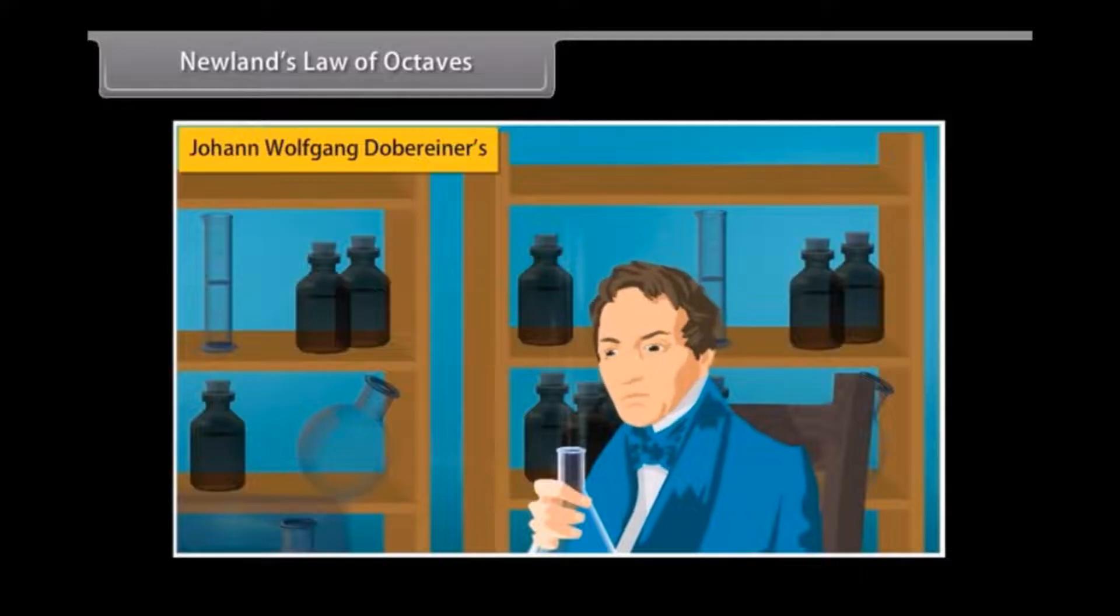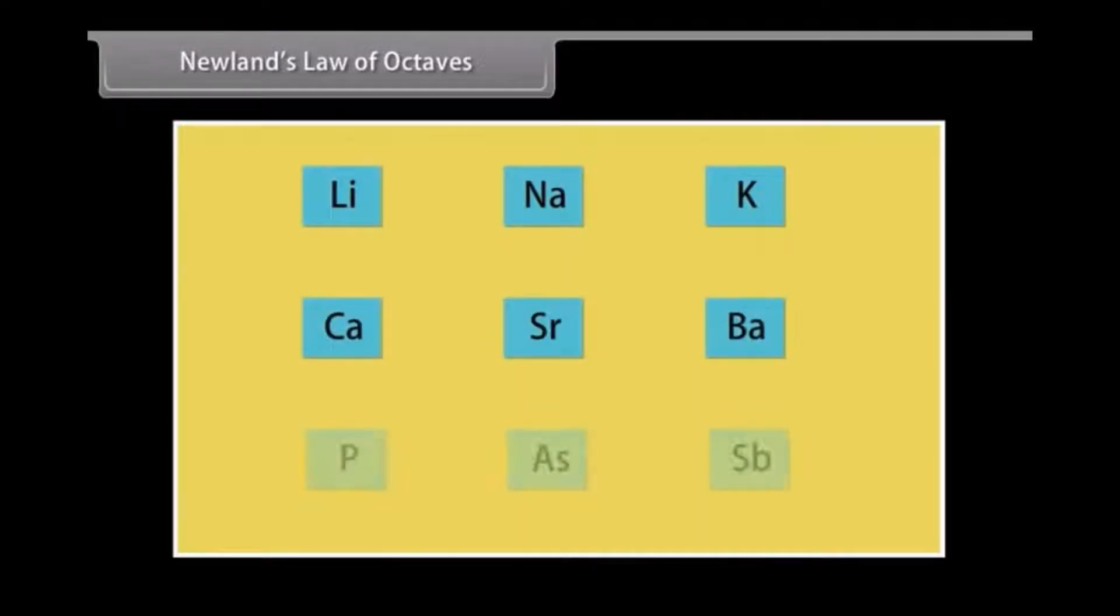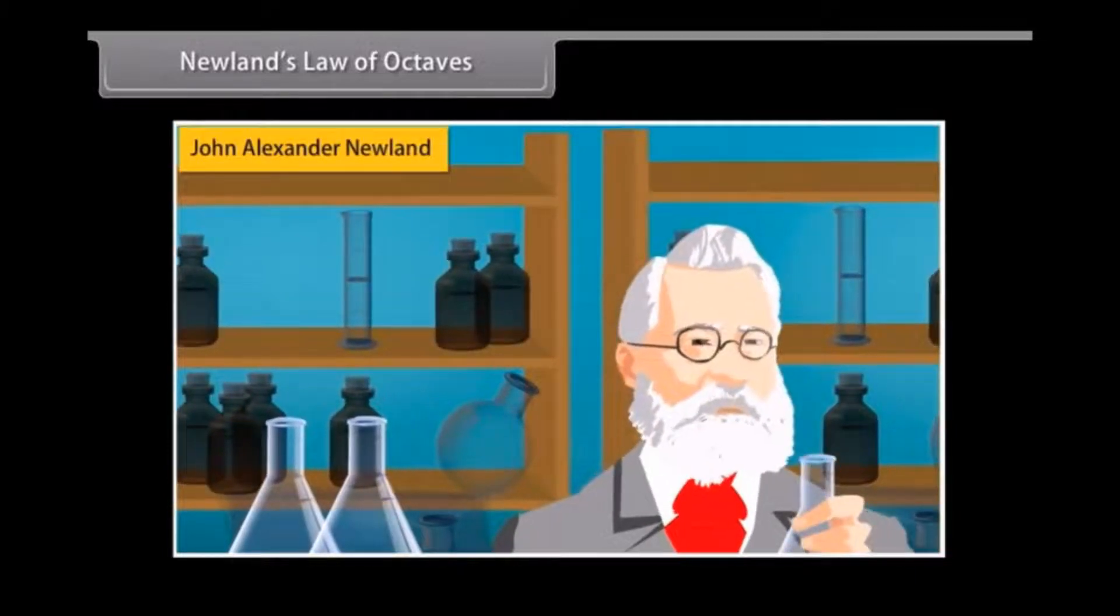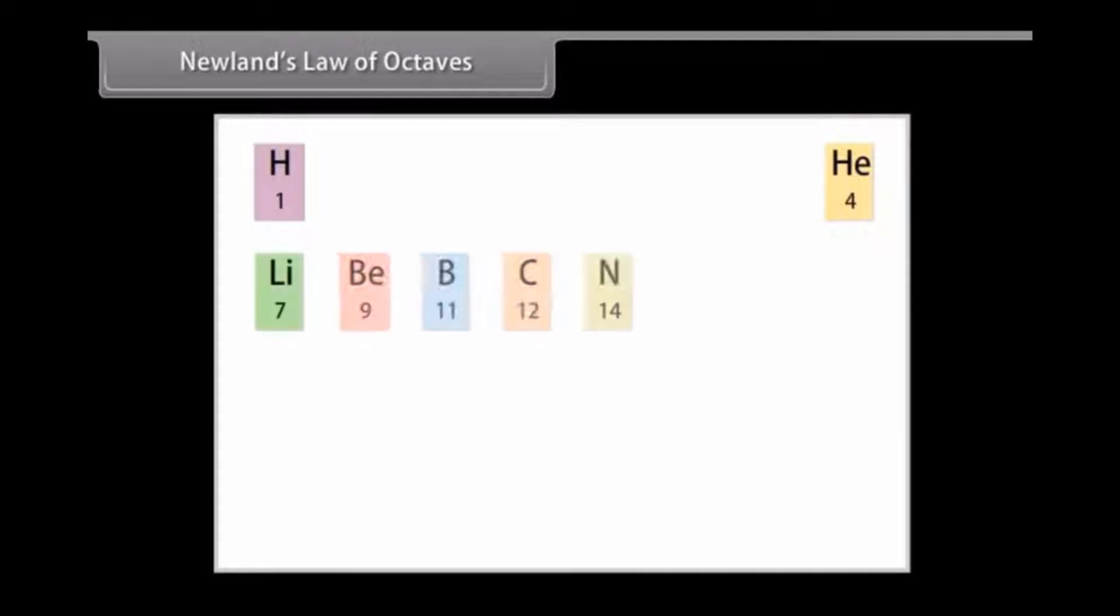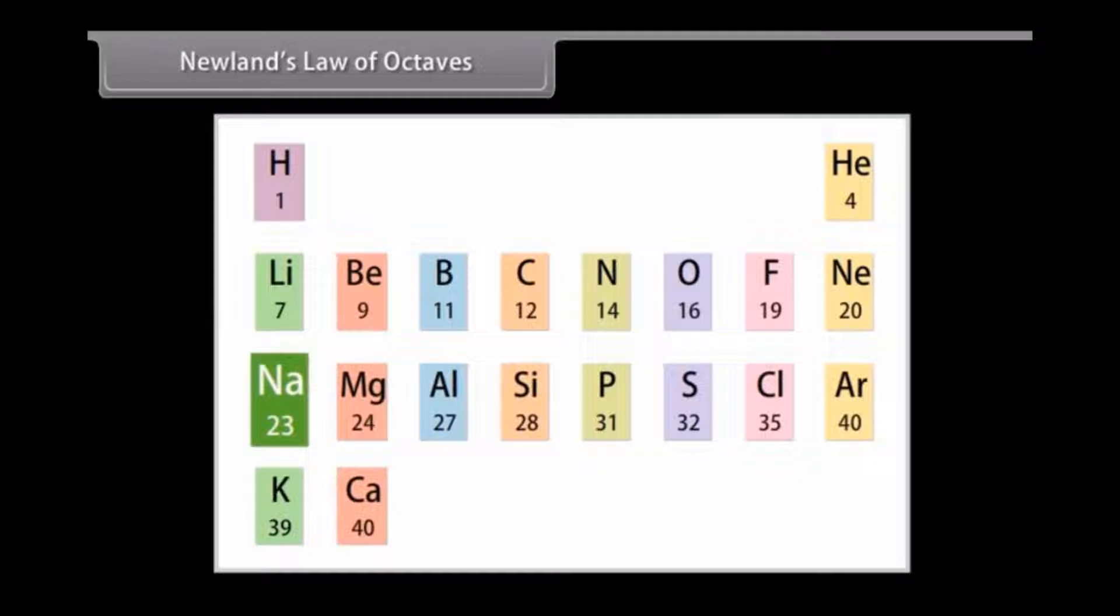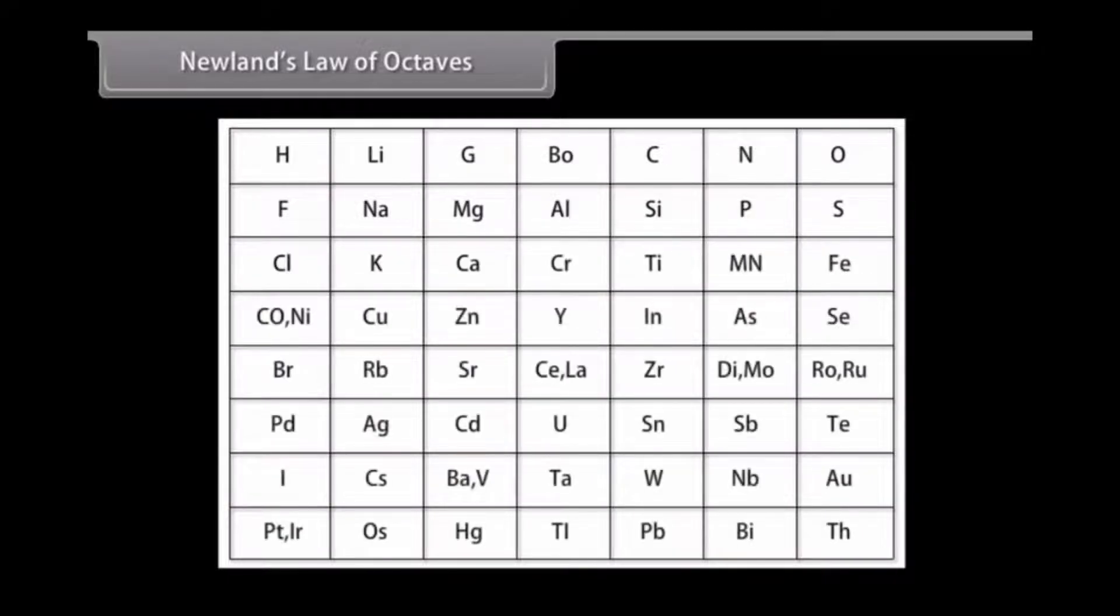Newlands Law of Octaves. Dobereiner's research simultaneously encouraged other scientists to start classifying elements. The triads were not useful as they could classify only three elements at a time. In 1864, John Alexander Newlands, an English chemist, discovered that when elements are arranged in the increasing order of their atomic masses or atomic weight, every eighth element had properties similar to the first element. This is called the Law of Octaves. However, all elements could be arranged in this order only till calcium, even though there were more than 60 elements available at that time.